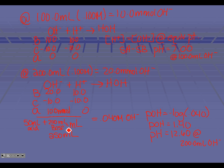So we have definitely zoomed right into those basic pHs. This is essentially what's going to happen in each of the problems we work. What's going to happen as we move into weak-strong combinations is that after we do our BCA chart, we're going to have to do some ICE as well. So let's start looking at some weak acid, strong base titrations.